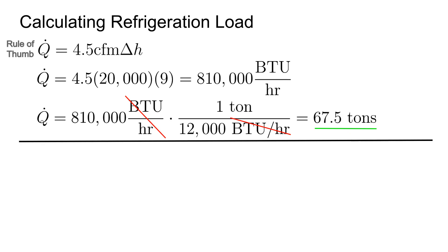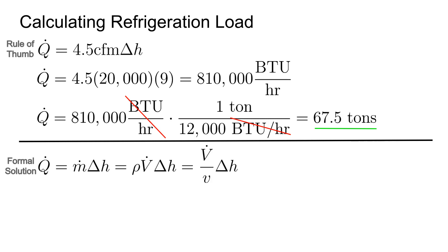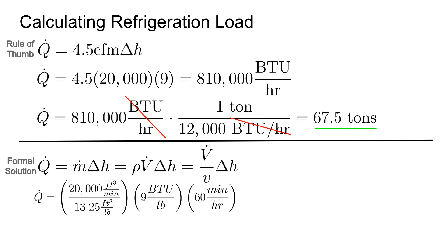Since many of you are worried about when you can and can't use rules of thumb, let's also show a formal solution where we use Q equals ṁ delta H, where the mass flow rate can be written as density times volume flow rate, or volume flow rate over specific volume times delta H, since specific volume is the inverse of density. We can plug in the CFM and delta H as before, but we need to get the specific volume from the psych chart. A common question is: should you pick the specific volume for air entering the coil or leaving the coil? The answer is you should take the specific volume for wherever you know the volume — in this case, we know the supply volume is 20,000 CFM, so we take specific volume from state four, the supply air. For most typical air conditioning applications your answer will be fairly close since the specific volume does not change dramatically.